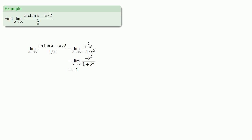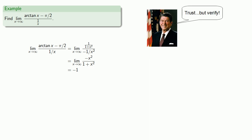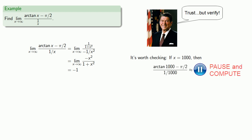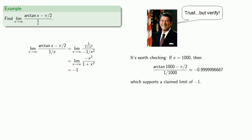There's enough work here and enough places where things could go wrong that it's worth verifying our result. This limit as x goes to infinity is really asking what happens for very large values of x. If x is 1,000, we find a value very close to −1, which supports our claimed limit of −1.